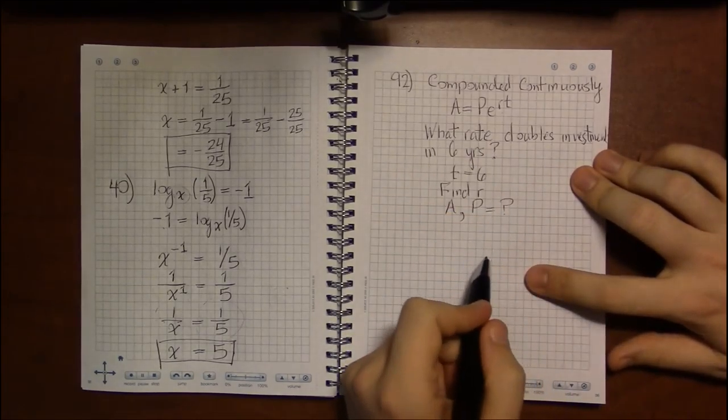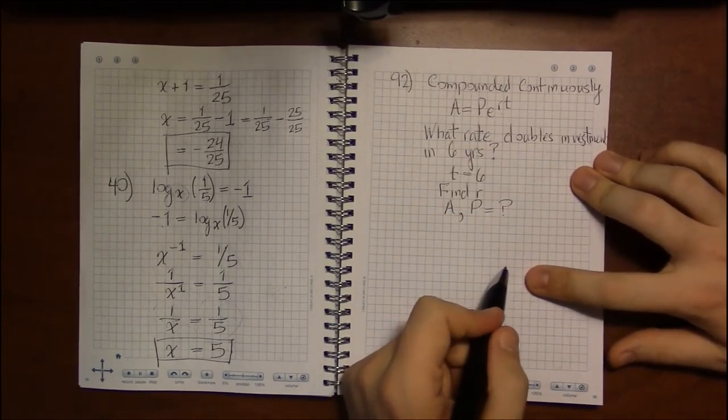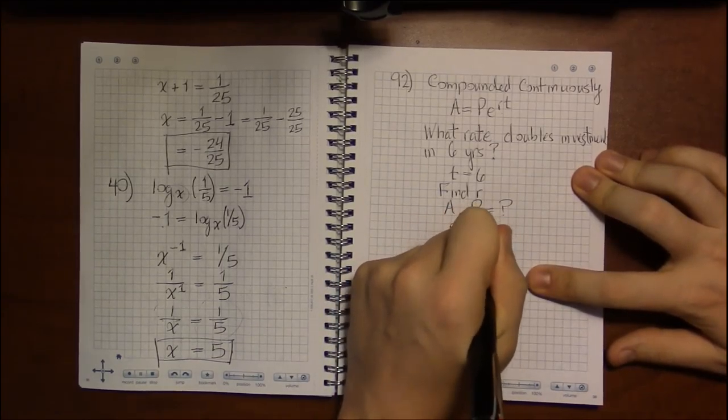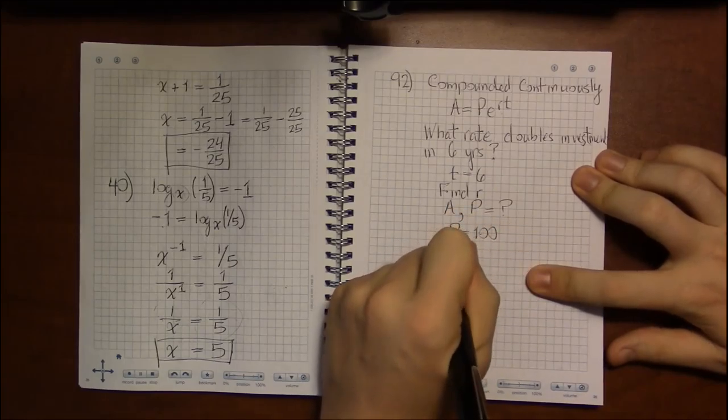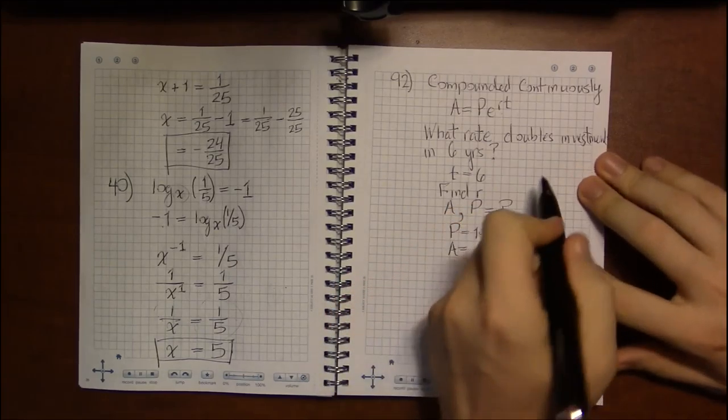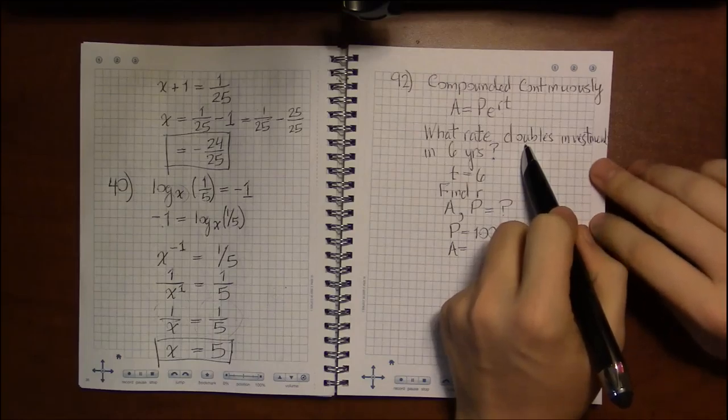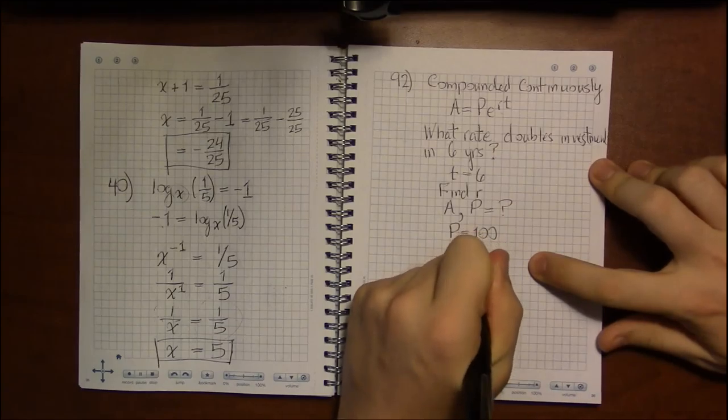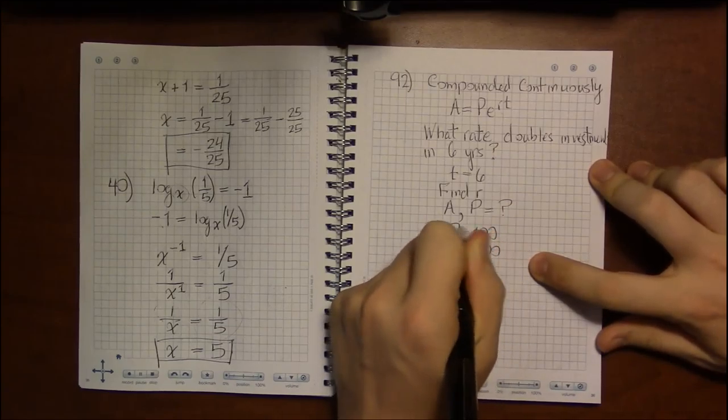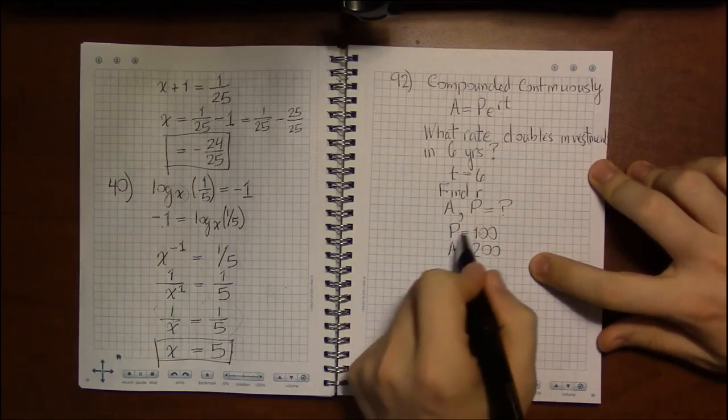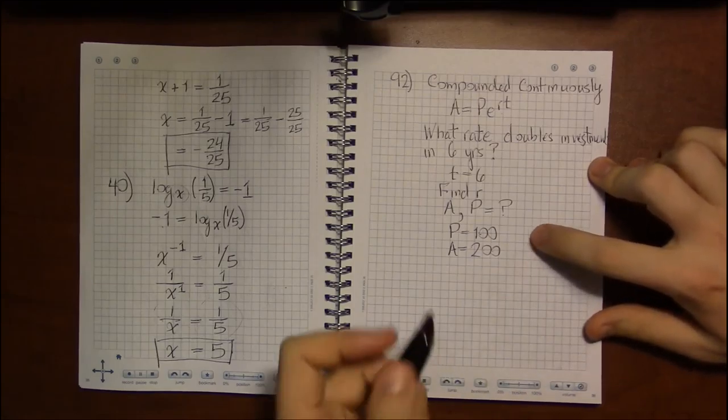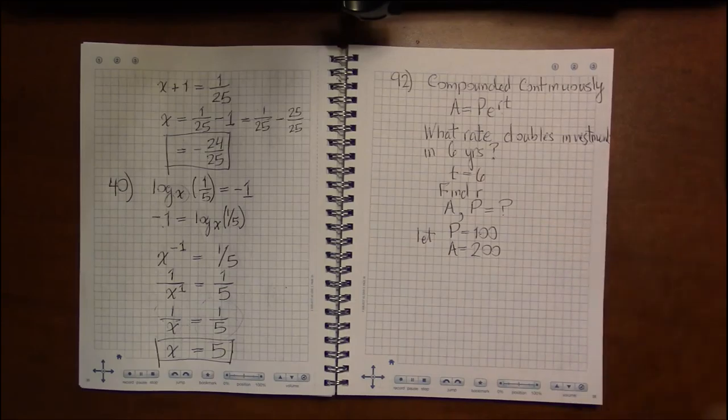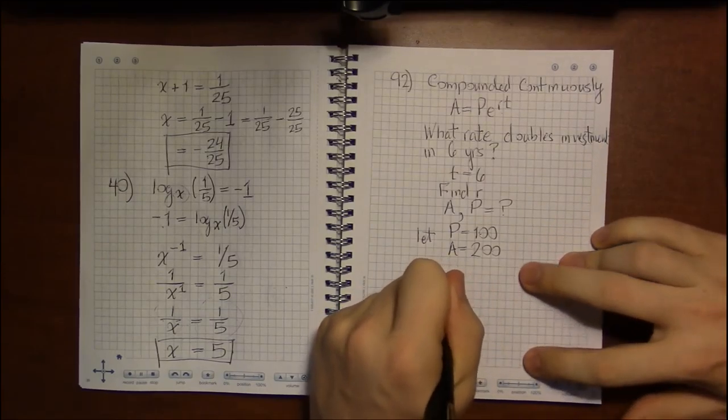What should those be? Well, it turns out it doesn't really matter at all. You can just make them up. So let's say you start out with $100. The only restriction on making these up is that you want the investment to double. So you want A to be twice as much as P. So if we just let P be 100 and A be 200, let's see what we can get out of this.